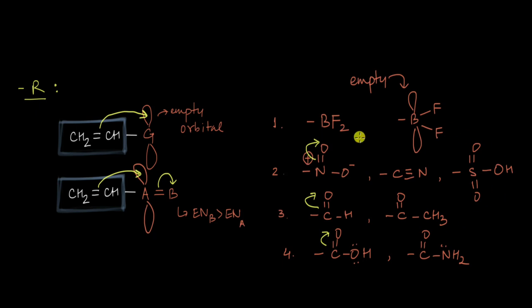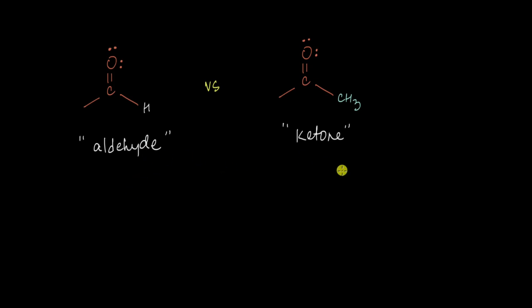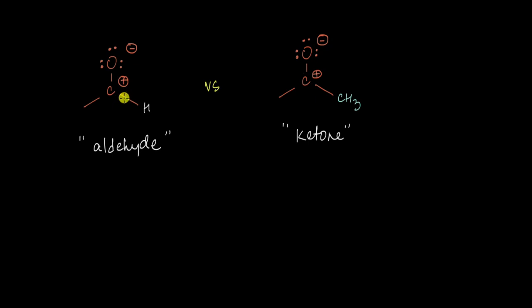The ability of each of these -R groups to withdraw electrons is not the same — some are really good at withdrawing electrons while others are not. Let's compare an aldehyde to a ketone group. To compare their electron withdrawing capacity, we first move the pi electron to the more electronegative oxygen atom, which creates an empty orbital on the carbon atom along with a positive charge — giving us an electron deficient carbon that can pull electrons from a surrounding pi system.